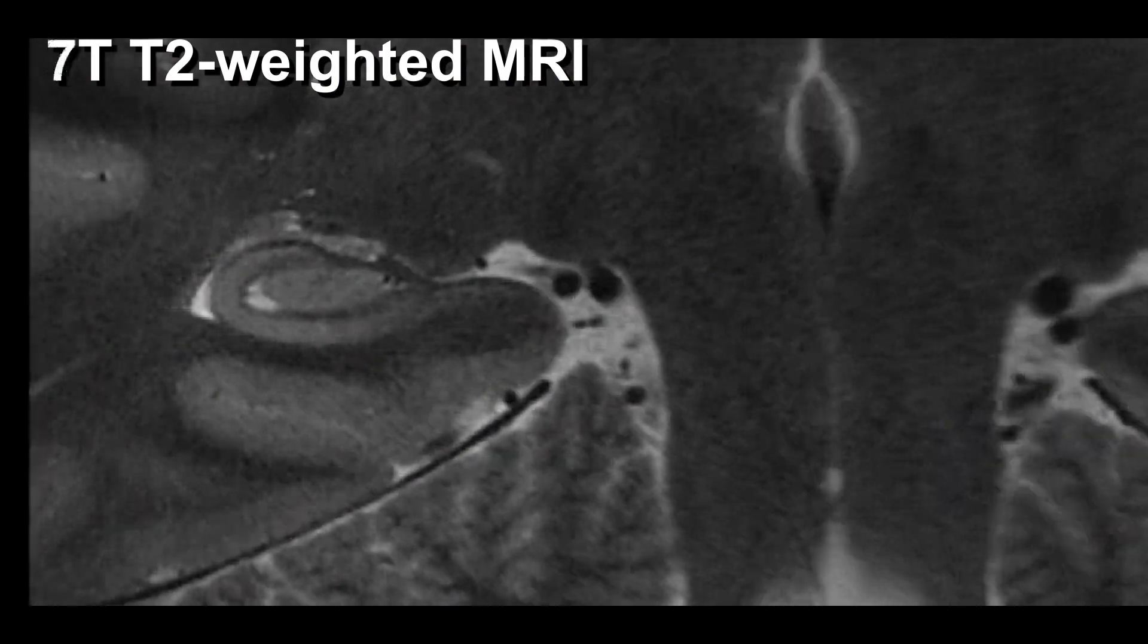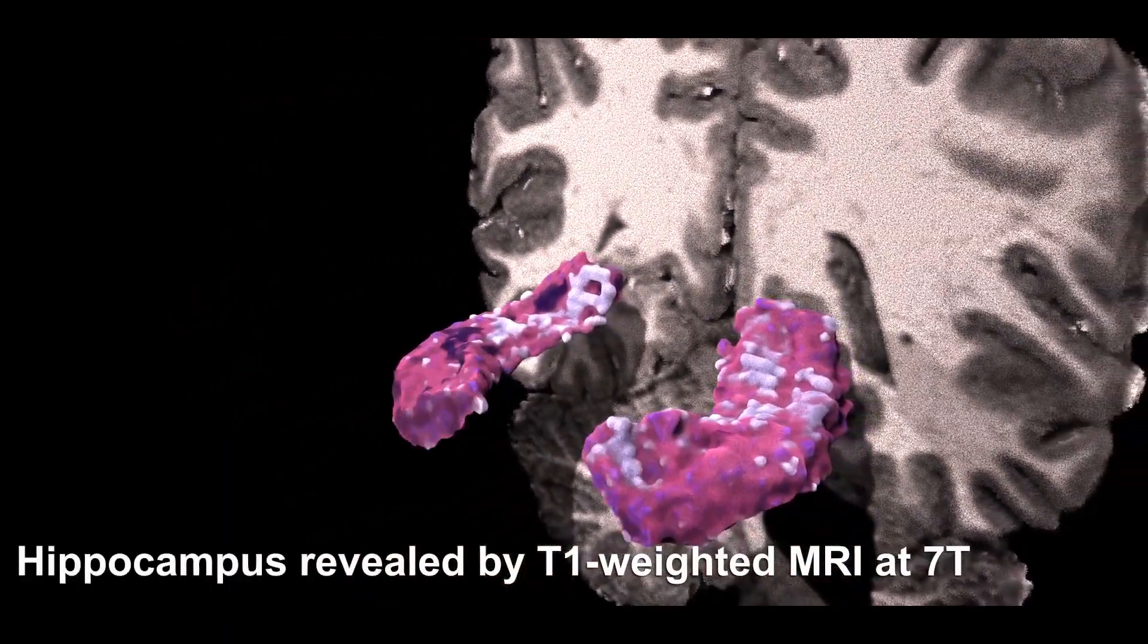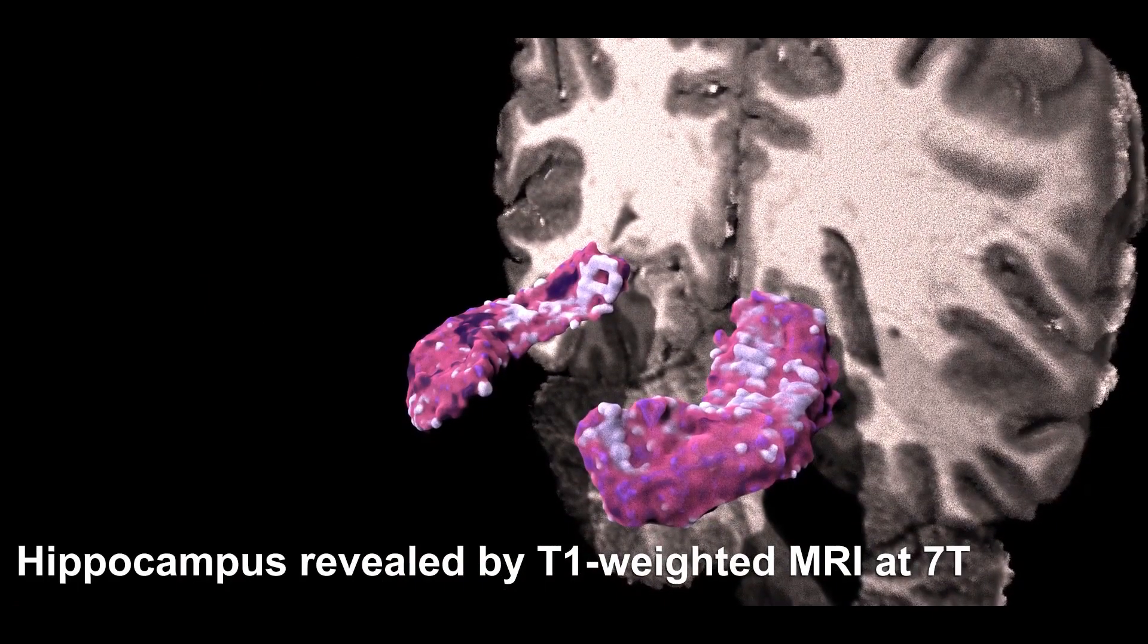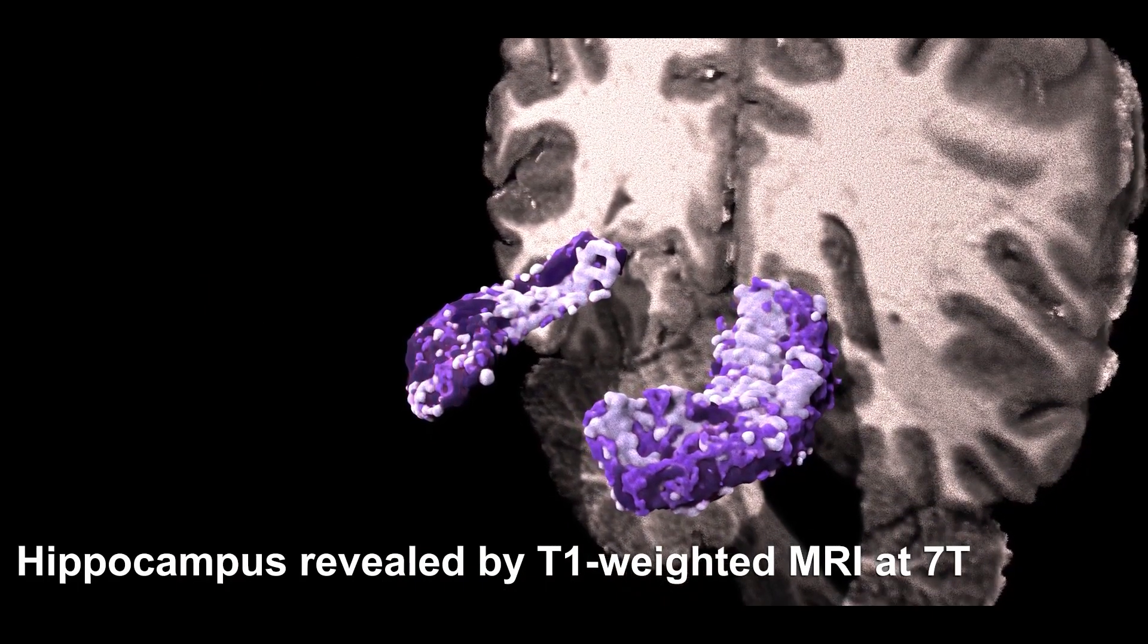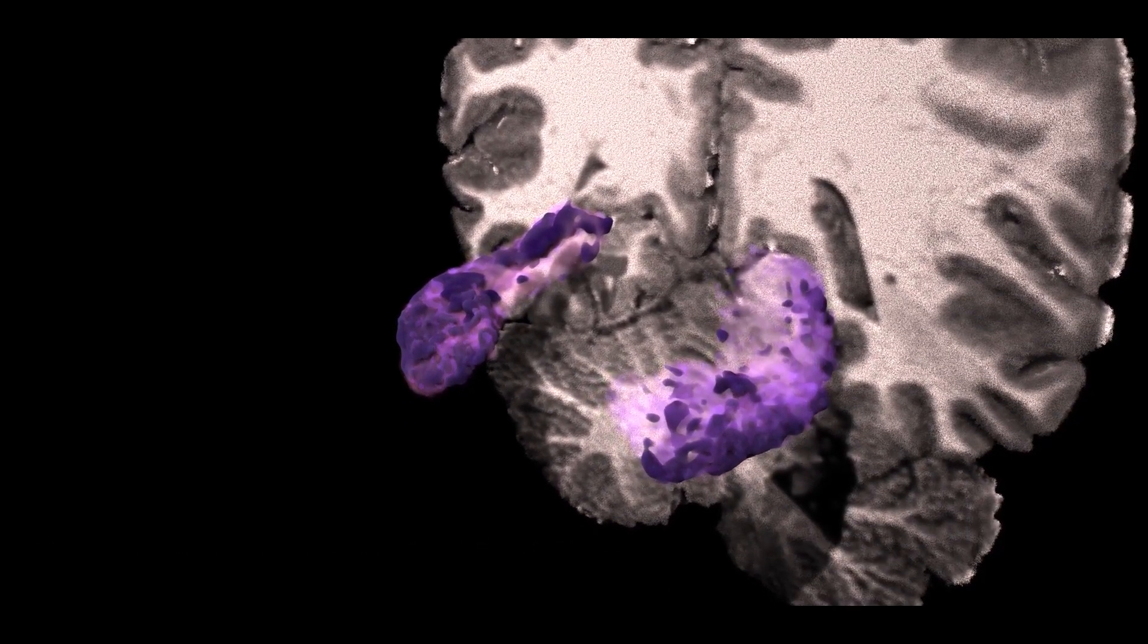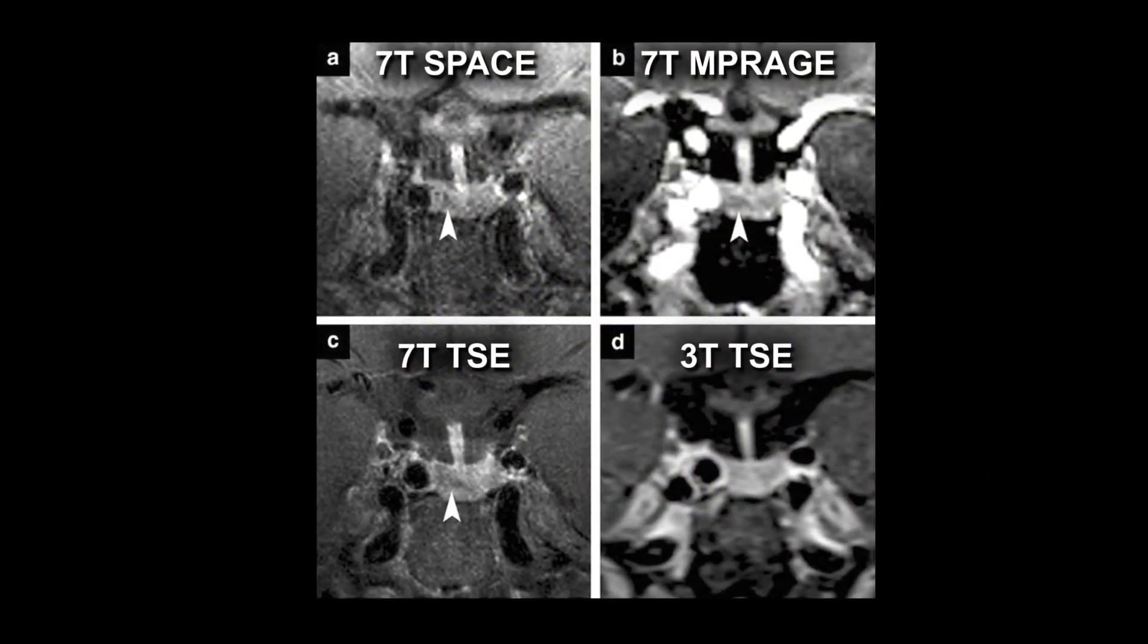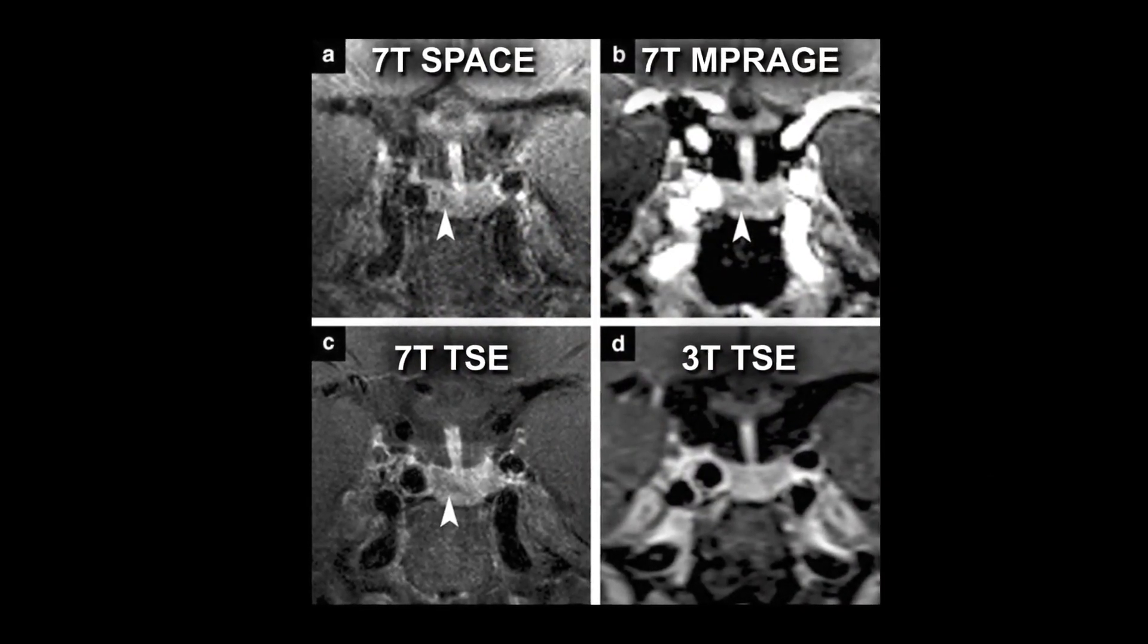For example, nerve scientists can discover numerous subfields of the hippocampus, a key structure damaged in aging and Alzheimer's disease. This new data can help doctors and researchers gain a clear understanding of how Alzheimer's disease affects the brain and allow them to design targeted treatments.